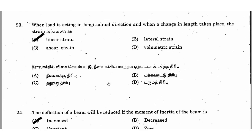Next question: when a load is acting in the longitudinal direction and a change in length takes place, the strain is known as? When a load acts in the longitudinal direction, the strain is the change in dimension divided by original dimension. For a lengthwise change, this is called linear strain or longitudinal strain. When load acts in the transverse direction, the change in dimension gives lateral strain.